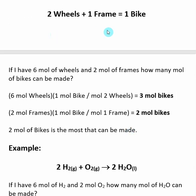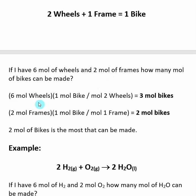Now let's step up the complexity a little bit. When we look at these reactions, we can consider individual species: two wheels plus one frame makes one bike. But remember, in reactions these can also represent moles — moles is just a number, like a dozen. So we can say it takes two moles of wheels plus one mole of frames to make one mole of bikes. If I have six moles of wheels, my reaction says for every two moles of wheels I make one mole of bikes, so the units cancel and I make three moles of bikes. The numbers are exactly the same — it's just we use moles now.